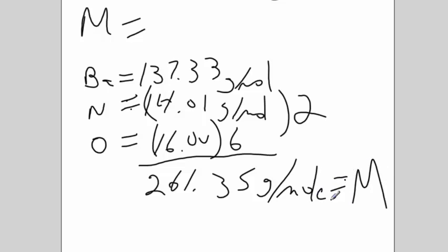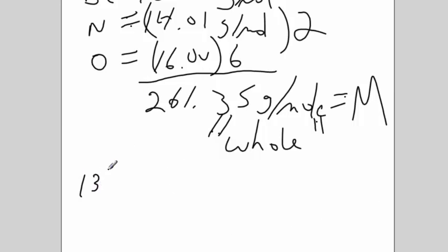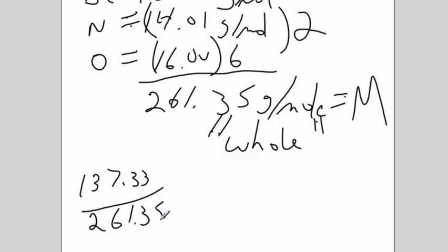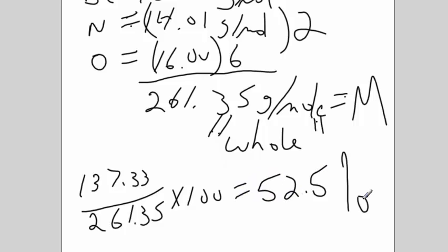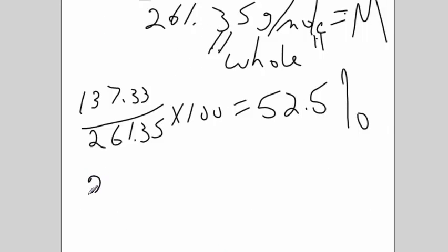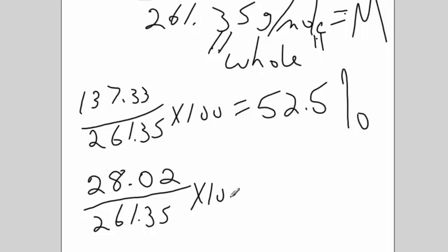That's capital M, and that is my whole in terms of percent. Any of these elements is the part. So 137.33 over 261.35 times 100 is 52.5%. So barium is 52.5% of the whole compound. For nitrogen, I want to use 14 times 2, so 28.02 over 261.35 times 100 equals 10.7%.